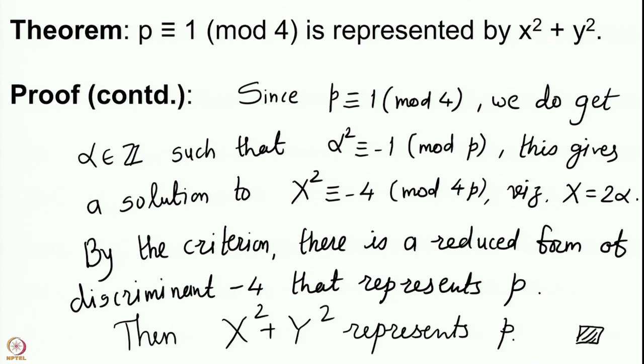To summarize: any prime p ≡ 1 mod 4 is represented by x² + y²; the prime 2 is represented by x² + y²; primes p ≡ 3 mod 4 are not represented by x² + y², but whenever such a prime divides x² + y² its square must divide the integer. Using this, in the next lecture we will determine the full set of integers which can be written as sums of 2 squares. Thank you very much.